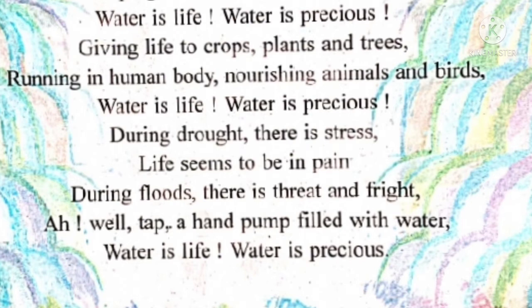During floods, there is threat and fright. Jab flood hoti hai, toh kya hota hai? There is threat — threat means khatra, and fright means bhai. Jab baarish heavy hoti hai, tab kya hota hai? Rivers, ponds, lakes, ocean — all are overflowing at that time. Sab mein paani overflow ho jaata hai aur flood aata hai.